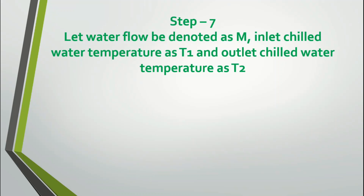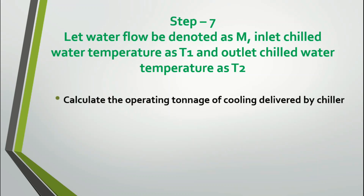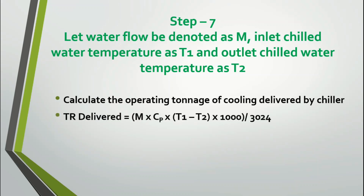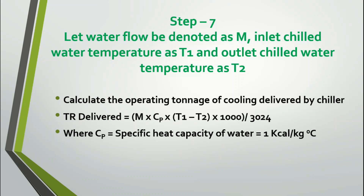Step 7: Let water flow be denoted as M (measured with the water flow meter in cubic meters per hour), inlet chilled water temperature as T1, and outlet chilled water temperature as T2. Calculate the operating tonnage of cooling delivered by the chiller using the formula: TR delivered = M × Cp × (T1 − T2) × 1000 / 3024, where Cp is the specific heat capacity of water (1 kcal/kg·°C), T1 − T2 is the temperature difference, and 3024 is the unit conversion factor.